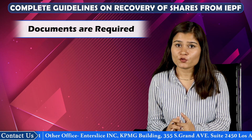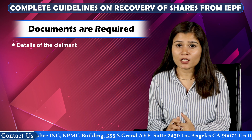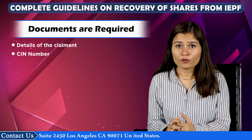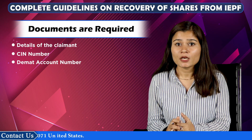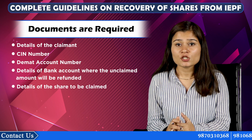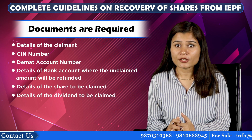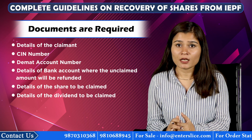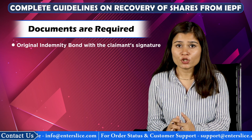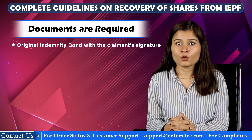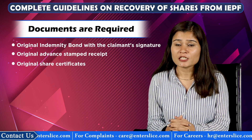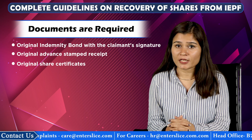What documents are required for the recovery of shares? 1. Details of the claimant along with Aadhaar card, or OCI or PIO number. 2. CIN number and other relevant details of the company from which the amount is due. 3. Demat account number. 4. Details of the bank account where the unclaimed amount will be transferred. 5. Details of the shares to be claimed. 6. Details of the dividend to be claimed. Essential documents to be attached with the form: an original indemnity bond with the claimant's signature on non-judicial stamp paper as per the Stamp Act, and an original advance stamp receipt with the signature of the claimant and witnesses. Original share certificates if the shares are in physical form, or a copy of the transaction statement if the securities are in Demat form.